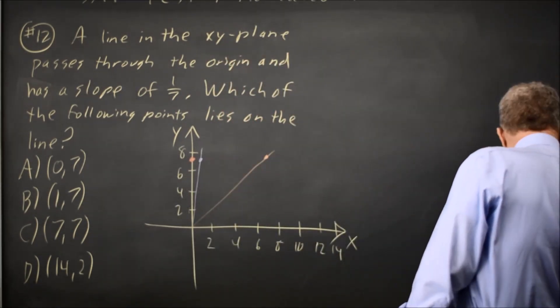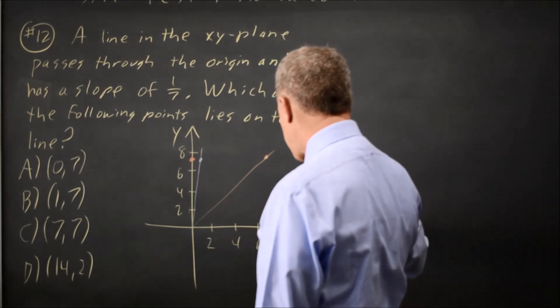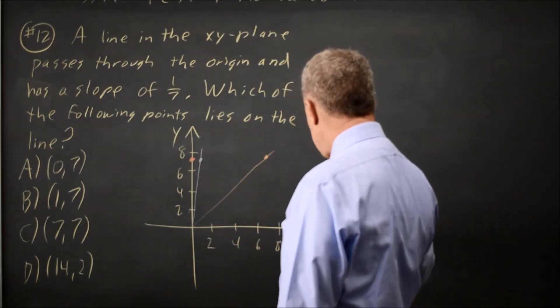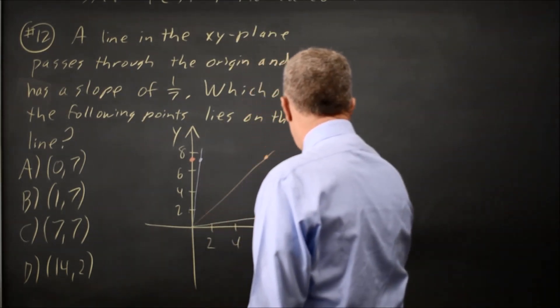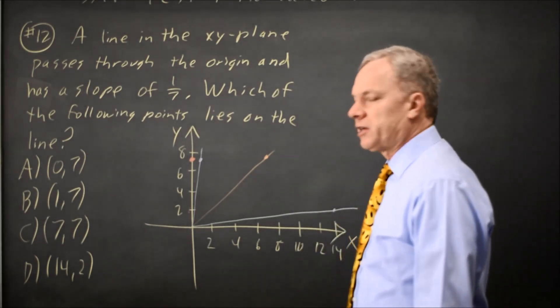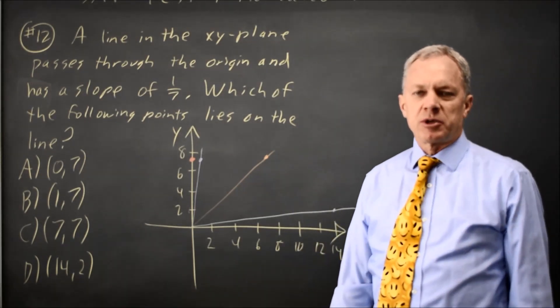Let's try one more point. x equals 14, y equals 2 is here. The line through the origin and through that point has a shallow positive slope, so that would be our correct answer.